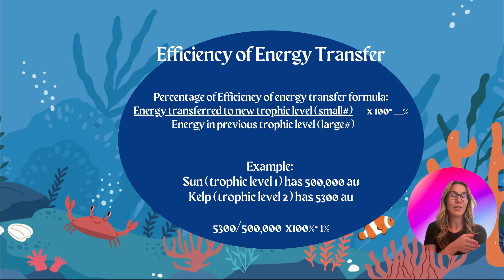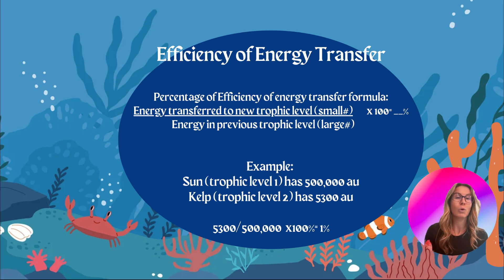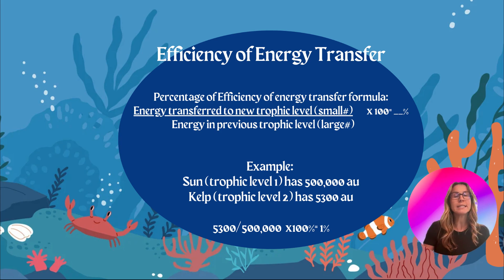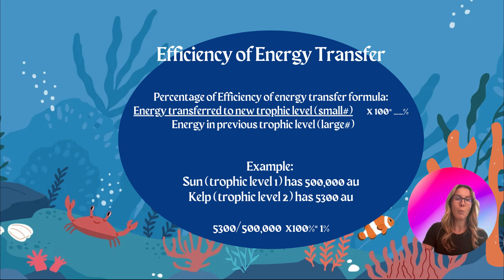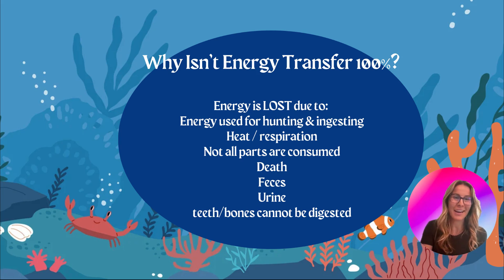Let's say the sun, which is trophic level one, has 500,000 arbitrary units (AU). The kelp absorbs that energy for photosynthesis and has 5,300 AU. To calculate the efficiency of energy transfer, you take the smaller number — the new trophic level, which is the kelp — and divide it by the larger number, the sun: 5,300 divided by 500,000, then multiply by 100 to get a percentage. In this case, we get 1% energy transfer.